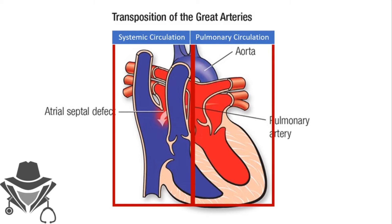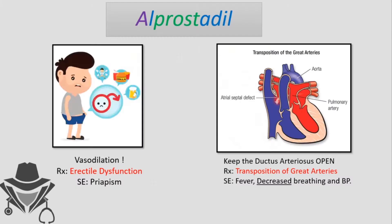The baby presents with early cyanosis because there is less oxygen in the systemic circulation. The ductus arteriosus is a shunt from embryological development connecting the pulmonary trunk and the aorta. Normally it closes shortly after birth, but alprostadil keeps this shunt open, allowing mixing of blood from both circulations so the baby can survive until surgery.